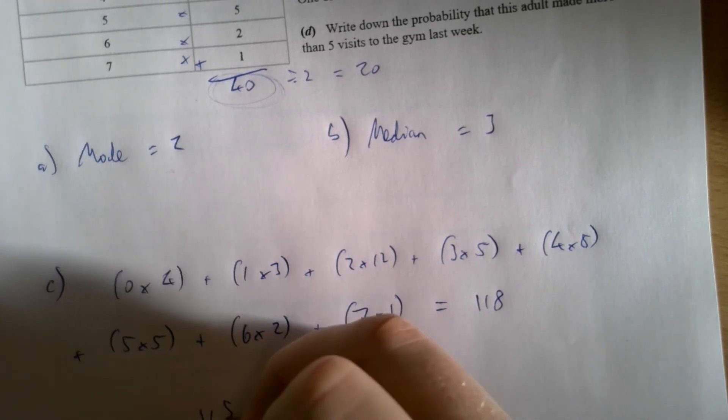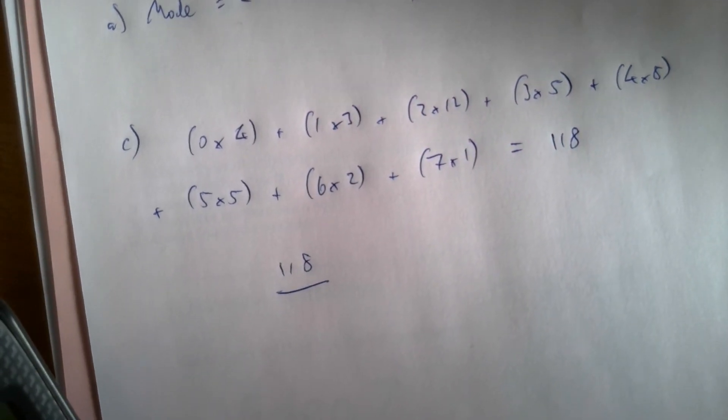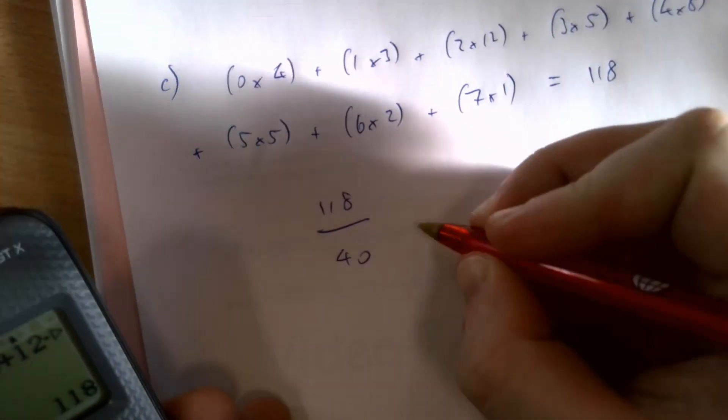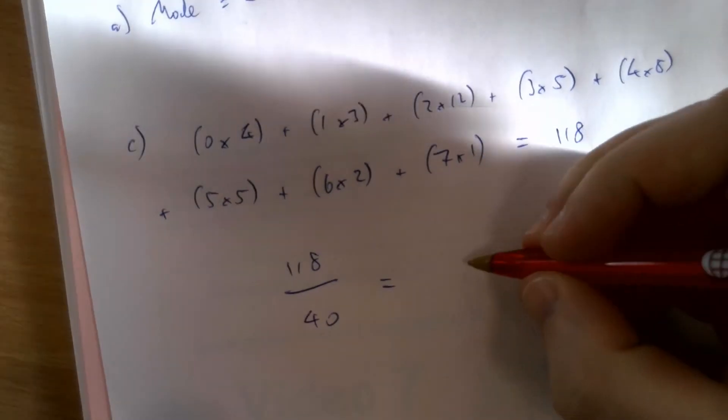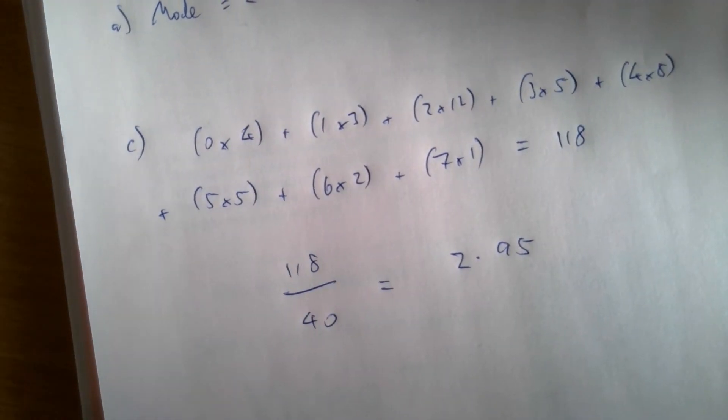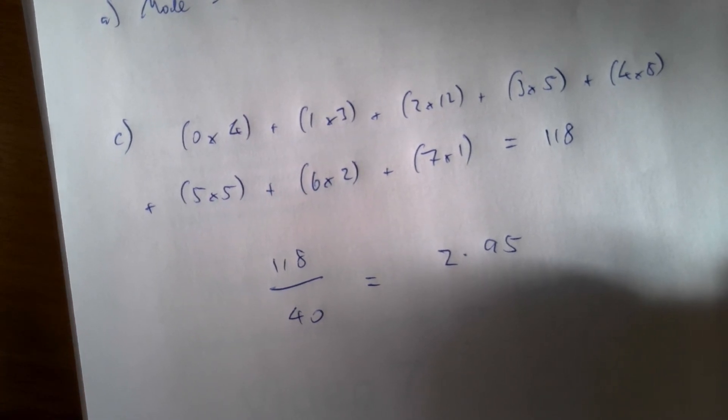Now to work out the mean, we take that total number of visits to the gym, 118, and then divide it by 40, the total frequency. 118 divided by 40 is 2.95. So on average, they're almost getting to three visits a week. That's the mean.